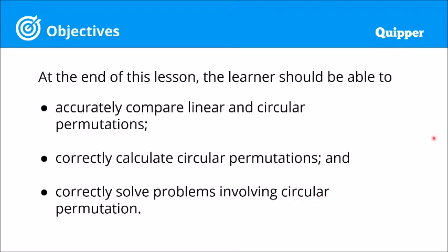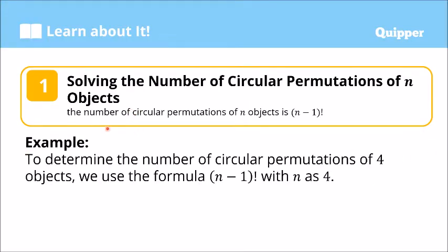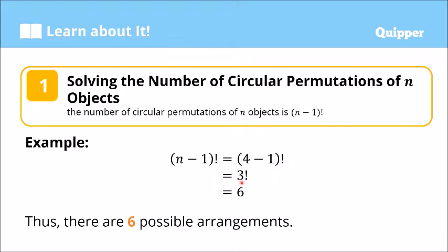So how do we solve circular permutations? The circular permutation of n objects is simply (n - 1) factorial — very easy to memorize. For example, the circular permutation of four objects uses the formula (n - 1)! with n = 4, so that is (4 - 1)! = 3! = 3 × 2 × 1 = 6.